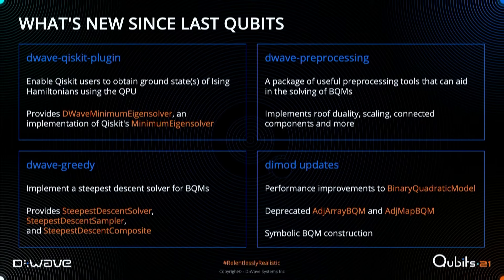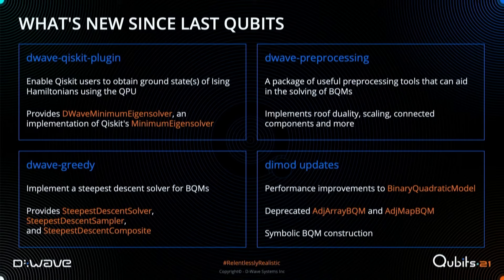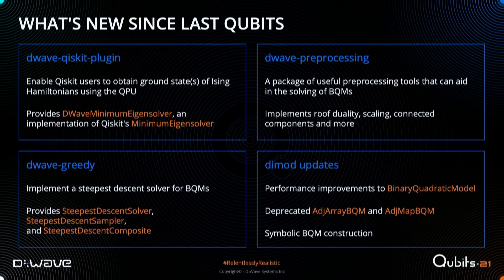D-Wave Preprocessing also includes scaling the problem and solving connected components — if your problem has disconnected components, you can solve each individually. Ocean also comes with classical solvers to compare results with the QPU or to run locally. Over the last year we added D-Wave Greedy, which implements steepest descent solvers for binary quadratic models. It's especially useful as a post-processing algorithm — you can use the QPU as a seed for a greedy algorithm by running downhill from whatever solution the QPU found.